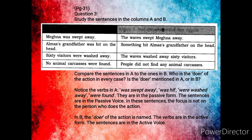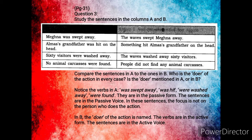Notice the verbs in A: swept away, was hit, were washed away, were found. They are in the passive voice. Whenever you see words like was, were, had, been, it shows that it is passive voice. In these sentences, the focus is not on the person who does the action. Whereas in B, the doer of the action is named and the verbs are in active form.